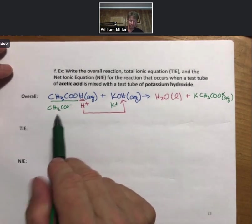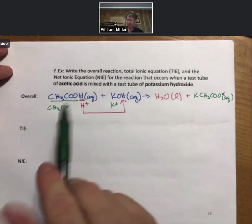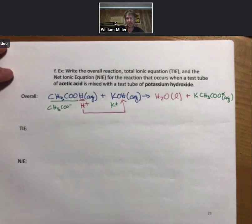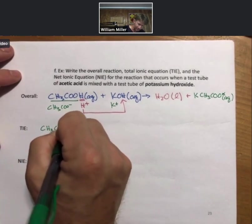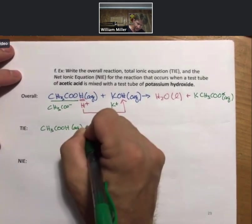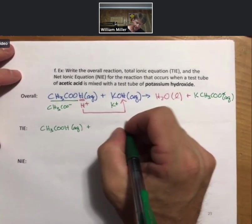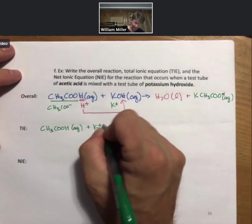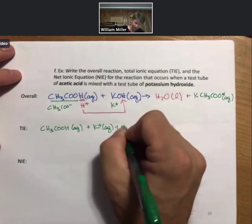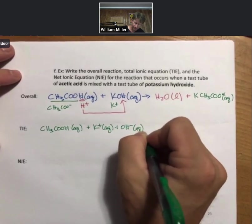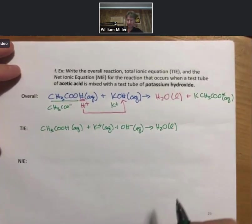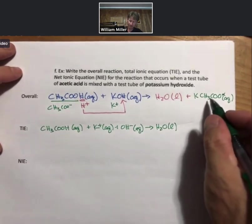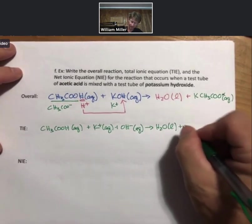Now, I know we broke this up into ions to figure out what our products are. We now have to remember that this is a weak acid. Weak acids, the dominant species in solution, is whole molecules. And, however, potassium hydroxide is a strong electrolyte. H2O. And now, strong electrolyte here, K plus.